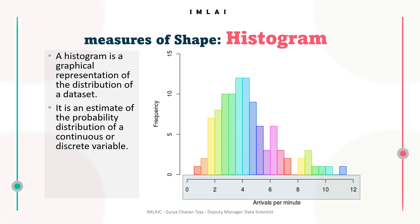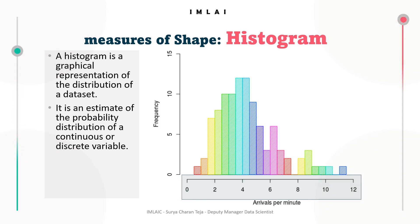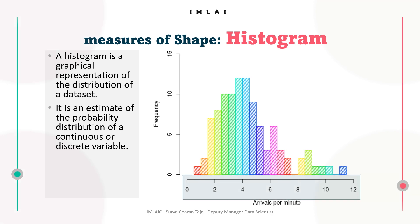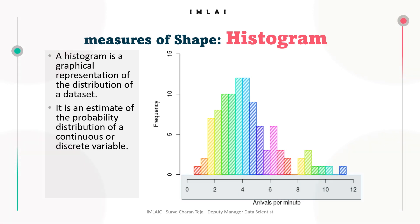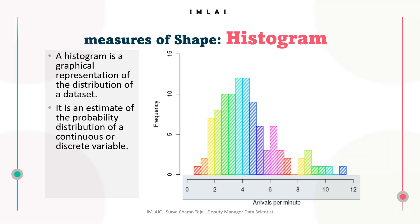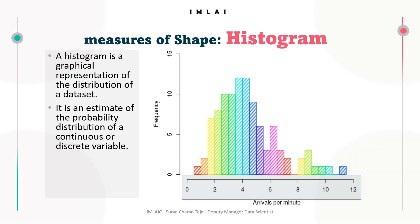The choice of bin width also affects the insights obtained from the histogram. This is a very important point: too few bins can result in a loss of information, while too many bins can result in a noisy or cluttered histogram. You should have an optimized number of bins so that you can get a histogram that accurately represents your data.